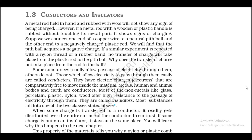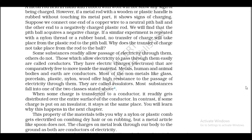Metals, human and animal bodies, and the earth are conductors. Most of the non-metals like glass, porcelain, plastic, nylon, and wool offer high resistance to the passage of electricity through them — they are called insulators. When some charge is transferred to a conductor, it readily gets distributed over the entire surface of the conductor. In contrast, if some charge is put on an insulator, it stays at the same place.